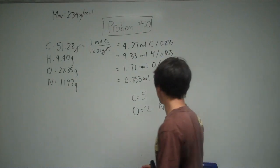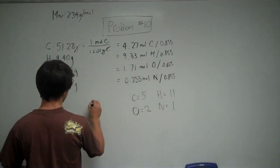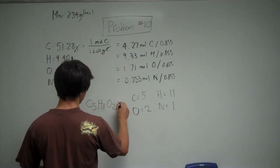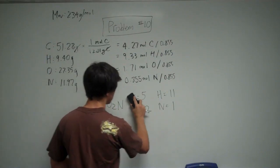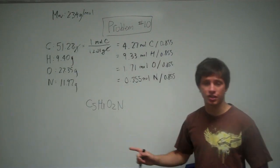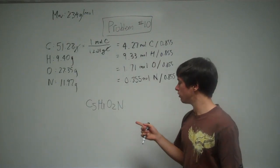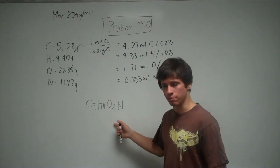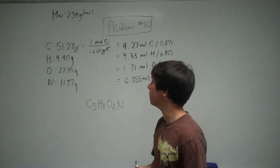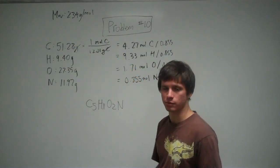So this gives you the empirical formula of the compound. And it's C5H11O2N. But this isn't necessarily the molecular formula of the compound. It's just the empirical formula. But what we can do is we can test if this weighs 234 grams per mole.